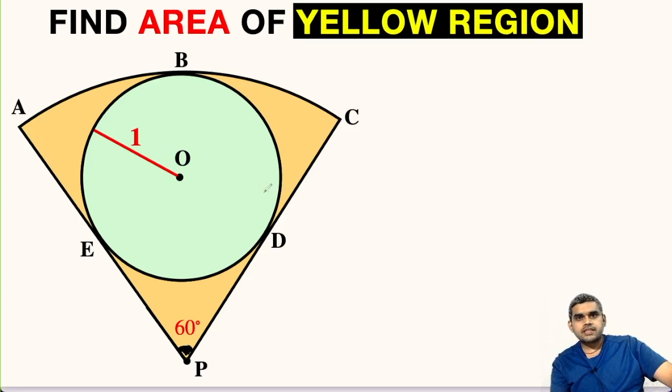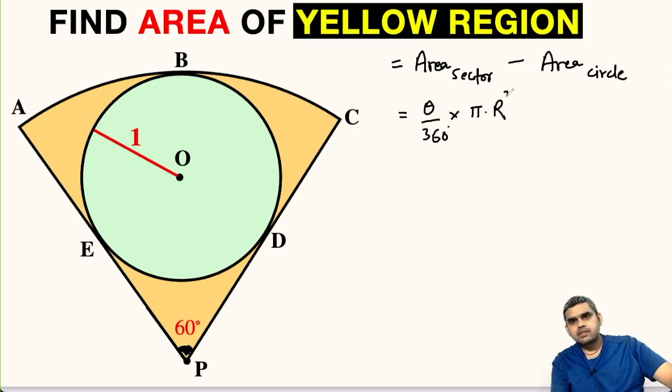The area of this shaded yellow part will be equal to area of the sector minus area of this small circle. Area of sector is given by the formula theta by 360 degrees multiplied with pi times the square of the radius.